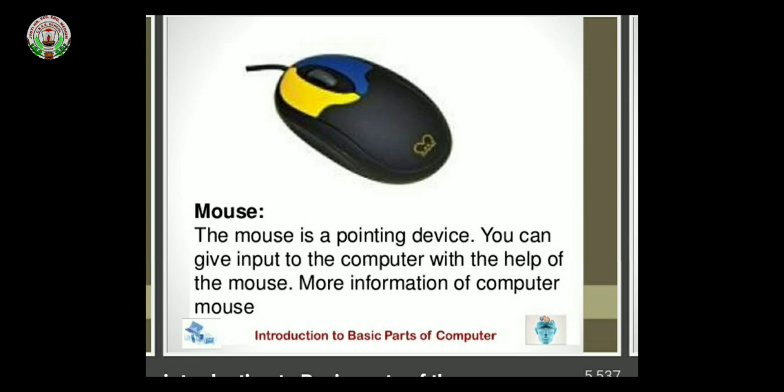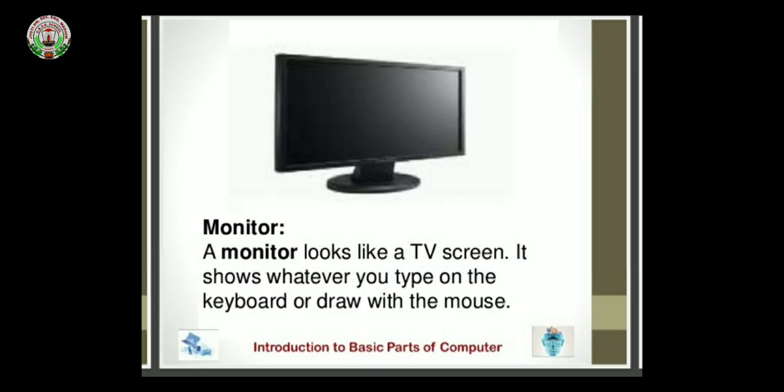Now this is a mouse. Everyone knows this is a mouse. The mouse is a pointing device — you can give input to the computer with the help of the mouse. Next is the monitor. The monitor looks like a TV screen.